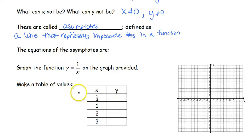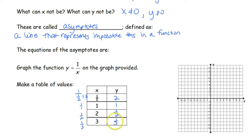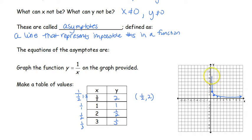If we've got 1 over 1 half — hopefully you did not say 1 fourth. Multiplying by the reciprocal, that would be 1 times 2 over 1, which would just be 2. 1 divided by 1 is 1, 1 divided by 2 is 1 half, 1 divided by 3 is 1 third. These create points: (1/2, 2), (1, 1), (2, 1/2), (3, 1/3). As it goes, we can see it's approaching 0 but never touching — getting smaller and smaller but never actually getting there.